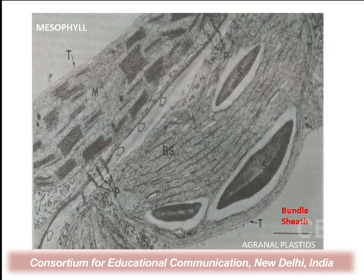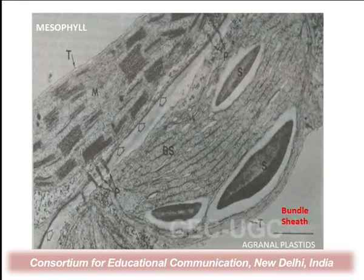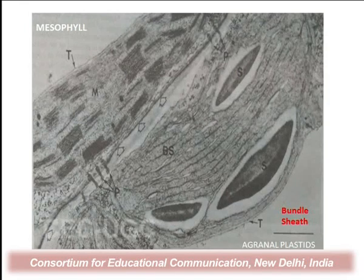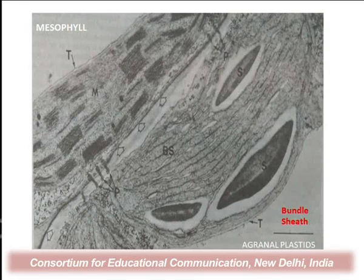The abundance of starch in bundle-sheath plastids means they are associated with the Calvin cycle, which ultimately results in the formation of sugars and starch. Both cell types are connected by plasmodesmata, as one can clearly see in electron micrographs. The bundle-sheath cells abound in starch grains, yet they have no grana organization — only scattered photosynthetic lamellae.